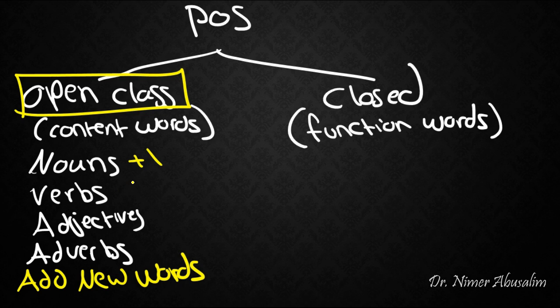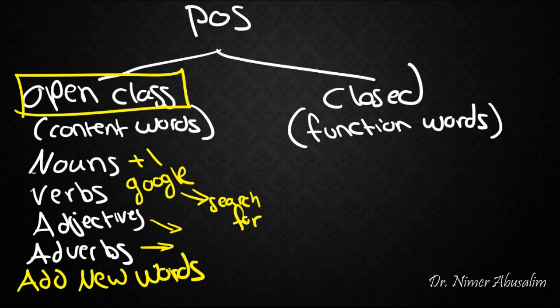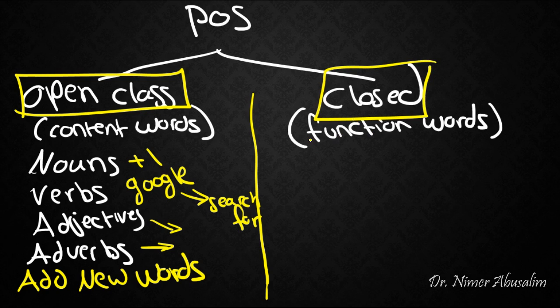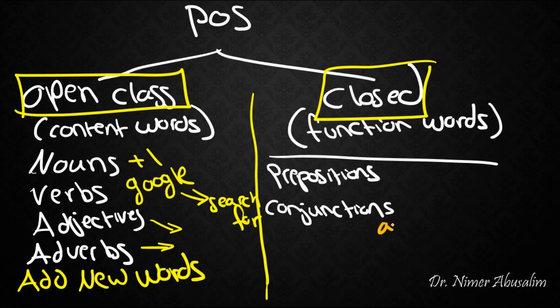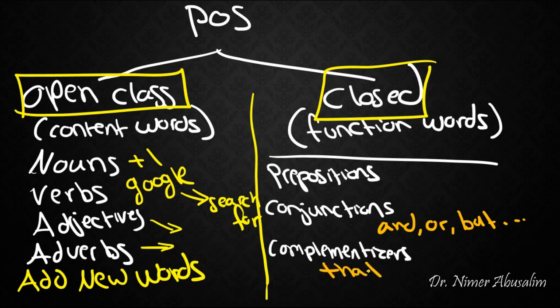For example, like using the word Google as a verb to mean search for. Likewise, you can think of new ways to describe nouns and new ways to describe actions. A closed class differs from an open class in that you cannot add new items. Such closed classes are prepositions, conjunctions like and, or, but, complementizers like that, for, if, and whether, and so on and so forth.